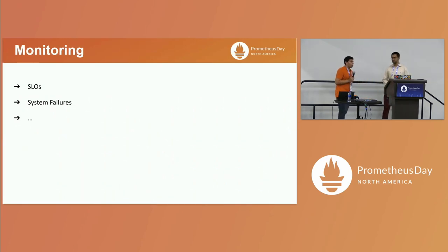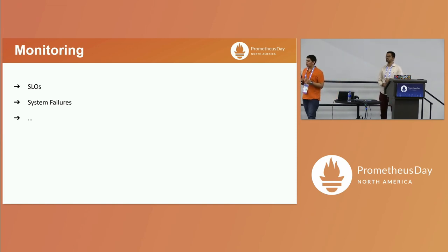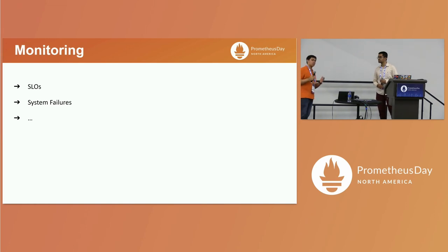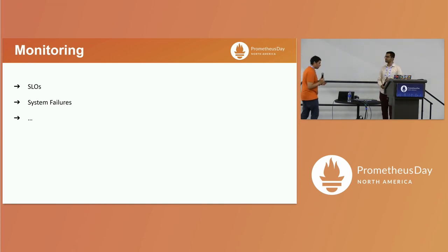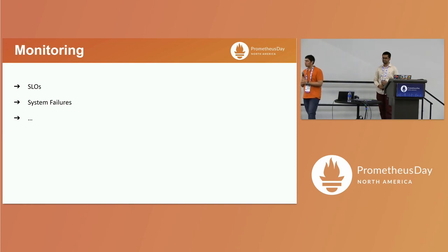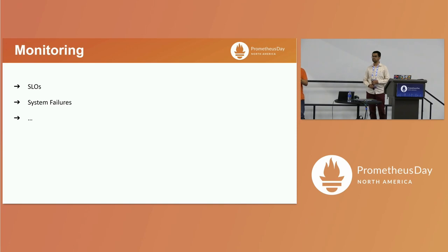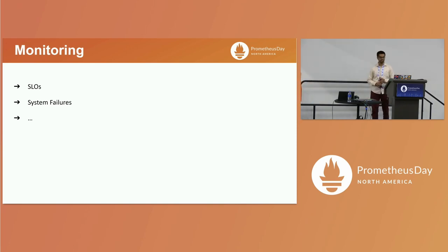We want to talk about things that have worked for us using Prometheus. When we talk about monitoring, traditional software monitoring — a lot of you might know monitoring in software or might have done it using Prometheus or some other tool. Usually monitoring in software includes thinking about SLOs, monitoring if your SLOs are being met, monitoring system failures, and so on.